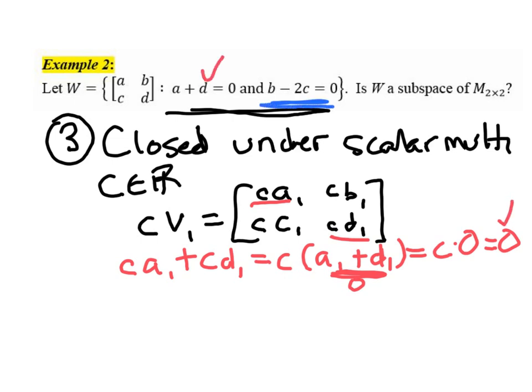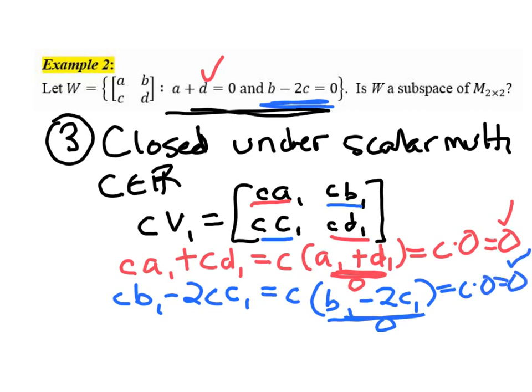Let me look now at the second equation: B minus 2C equals 0. So that's this entry minus 2 times this entry. So C times B1 minus 2 times C times C1. Again, I can factor out the C, and I have B1 minus 2C1. Since the vector V1 is in W, this must be 0. So this is C times 0, which is 0. So this equation is satisfied. So the answer is yes, it's closed under scalar multiplication.